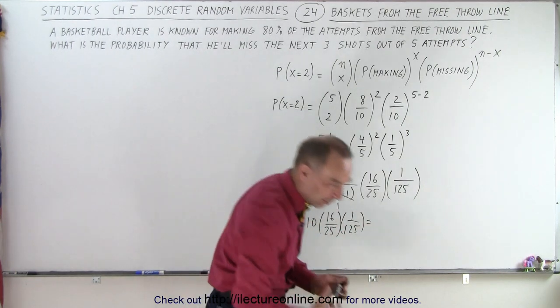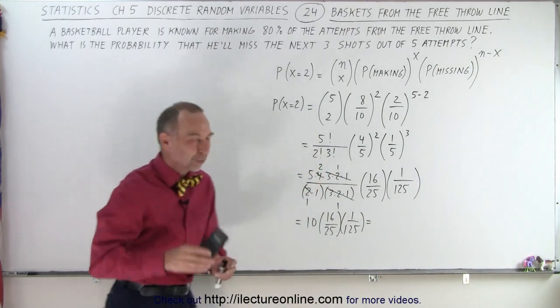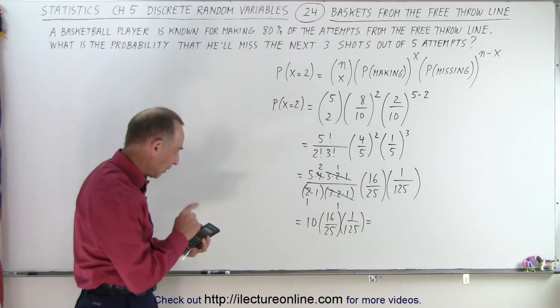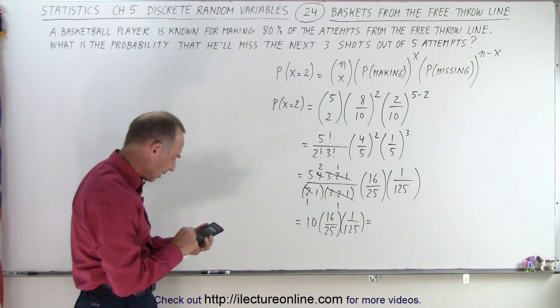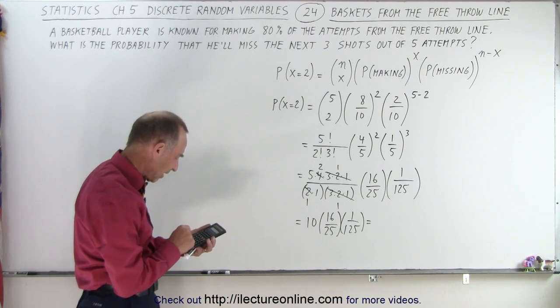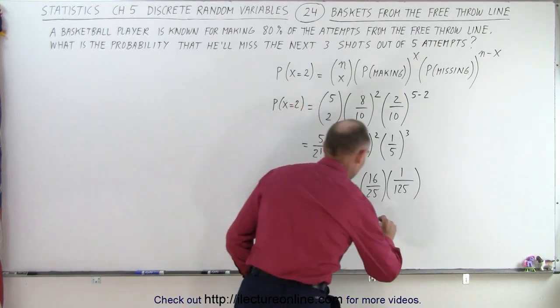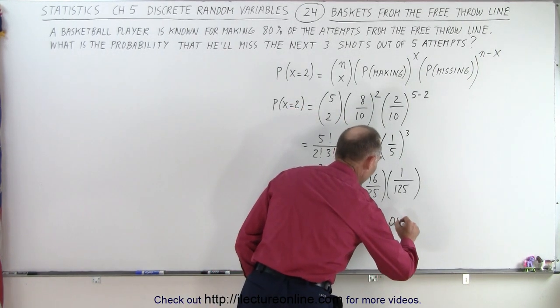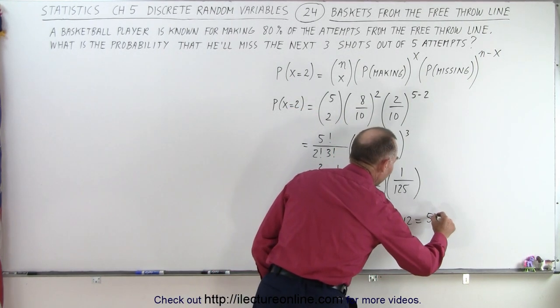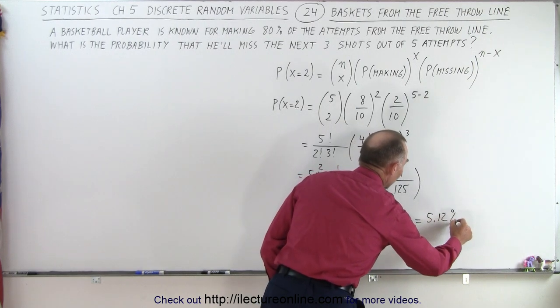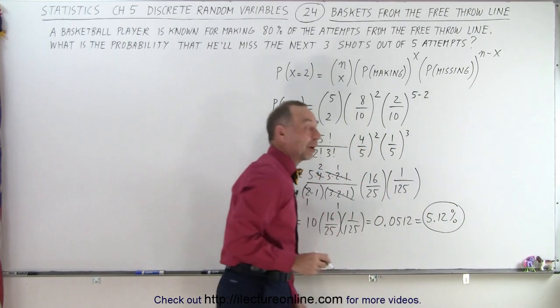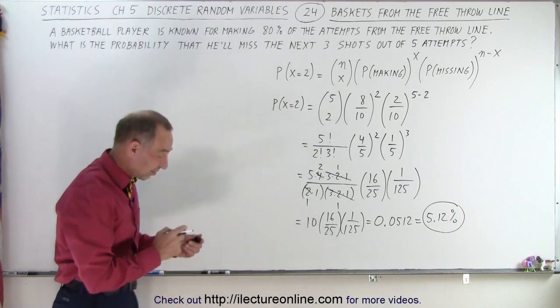All right, so let's see what the probability is that he'll miss three of the five next attempts. So we have 160 divided by 25 divided by 125. That gives us 0.0512.